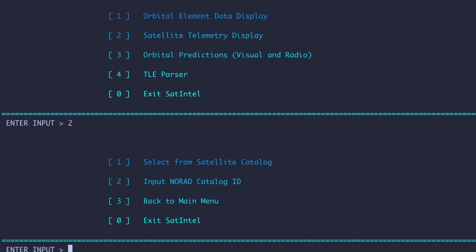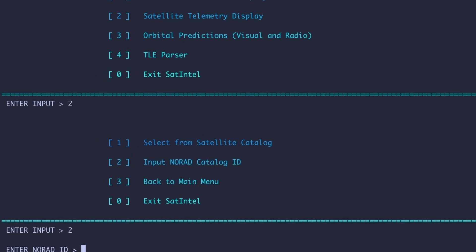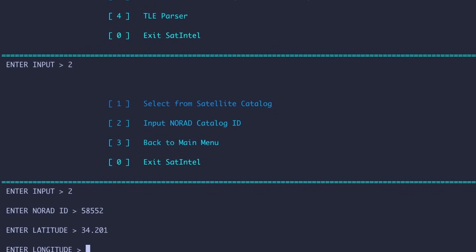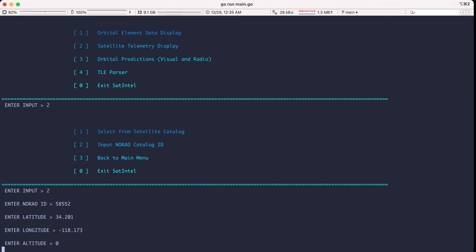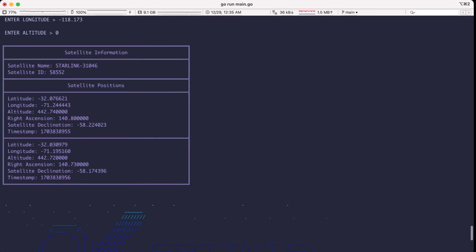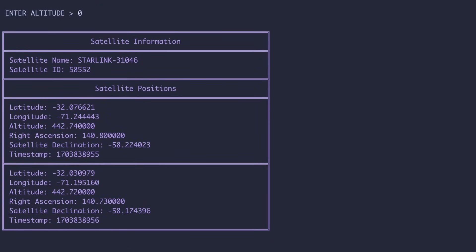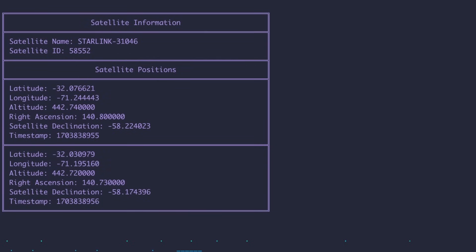We're going to be using this tool to get the satellite telemetry display of the Starlink satellite. So I'm going to be typing in the number corresponding to that option, 2, and then press enter. In this case, we're going to be using the NORAD catalog ID, so I'm going to press 2 again. I know the NORAD ID of the Starlink satellite is 58552 from the N2YO website. For the latitude, you can enter in the geocoordinates for your location. Altitude can be 0. You can see that it printed out the information about the Starlink satellite and satellite positions and when it will assume those positions during the time. It'll state the longitude and latitude, the altitude, the right ascension, declination, and the timestamp of where the satellite will be at.